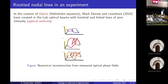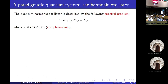Of course, they can produce other knots. This is a motivation to consider this problem — to try to understand nodal lines of solutions to Schrödinger operators. I'll say something about solutions to the Helmholtz equation later, but I'm going to focus in this talk on a quantum system, which is a paradigmatic quantum system: the quantum harmonic oscillator. Let me recall what the quantum harmonic oscillator is and how it's described. It's defined by this spectral problem in Euclidean space. I'm going to consider R³.